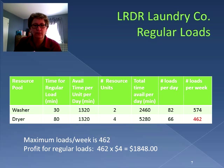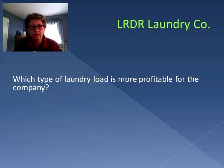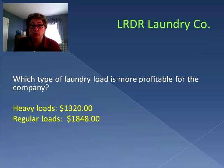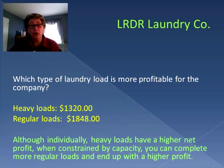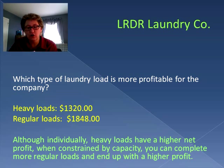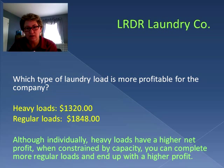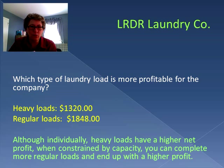So let's compare the two. Which type of laundry load is more profitable for the company? Well, if we only did heavy loads we could earn $1,320, but if we only did regular loads we could earn $1,848. So although individually heavy loads have a higher net profit, when you consider the capacity constraint of the process, you can actually complete more regular loads and end up with a higher profit. Just the net profit per item is not enough — you also have to consider the capacity.